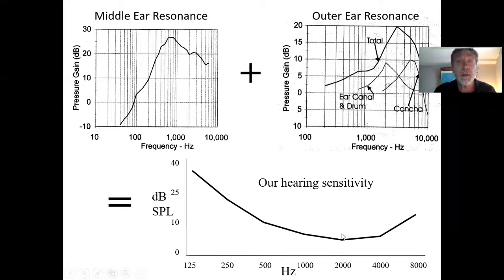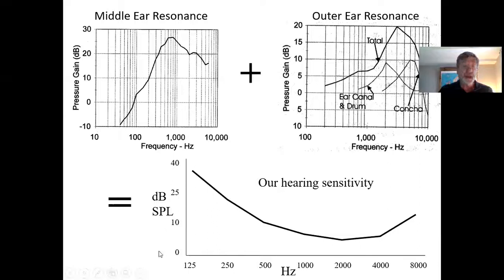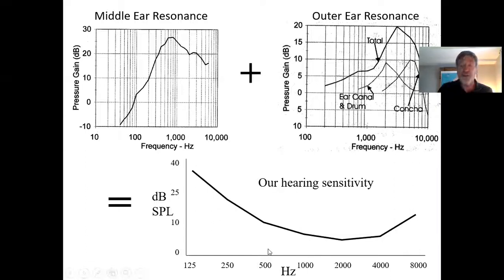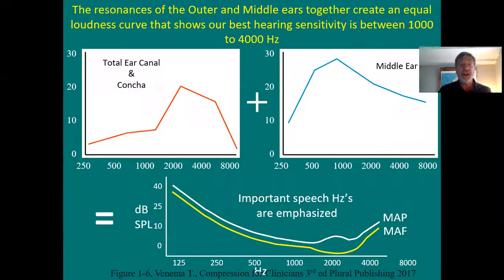Our best hearing sensitivity is around 1 to 4000 Hz. It takes more pressure to hear 250 Hz or 500 Hz, but our hearing is best right in that range. This shows the amount of pressure it takes to just barely hear all the different frequencies, and you can see it's shaped like a smile — we have uneven hearing sensitivity across the frequencies.